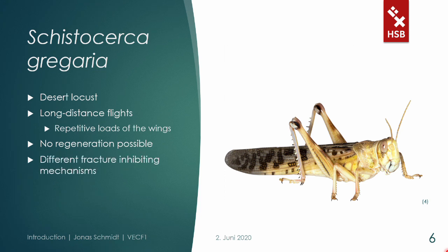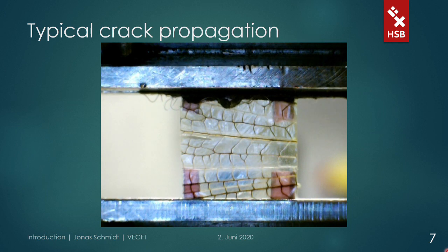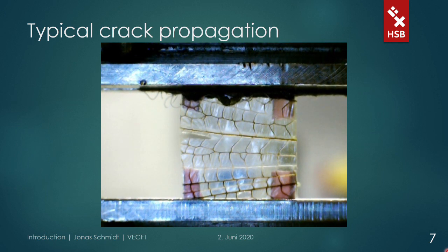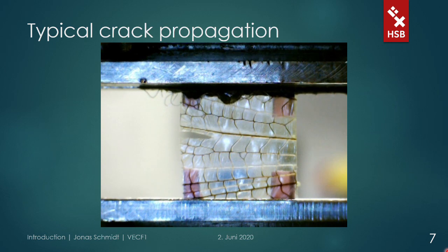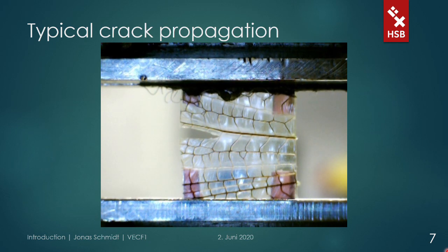One of these fracture-inhibiting mechanisms is the characteristic vein pattern of a wing. In this tensile test, where constant displacement was applied to a wing sample with a pre-induced crack, you can see how the crack propagation is partially stopped when the crack encounters the veins. This visualizes an increase in fracture toughness of the vein and an effective decrease of crack growth speed.